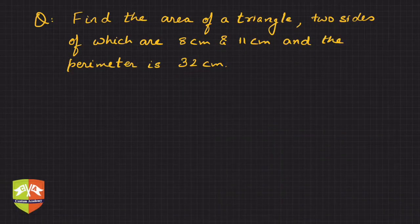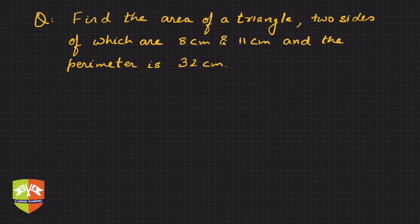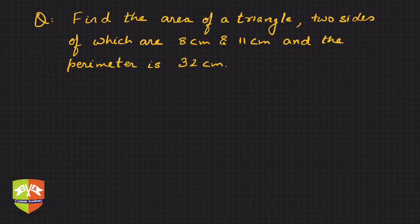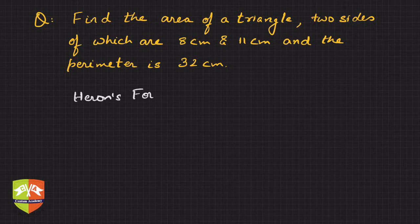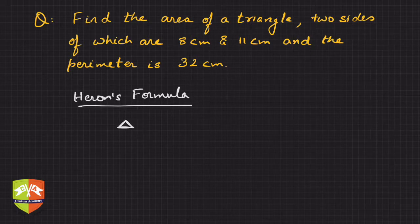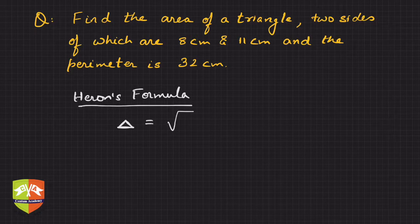Hey friends, now we're going to deal with problem solving on Heron's formula. Heron's formula is a formula used to find out the area of a triangle with three sides given. The formula looks like this: square root of s times s minus a times s minus b times s minus c.